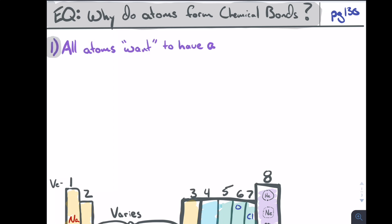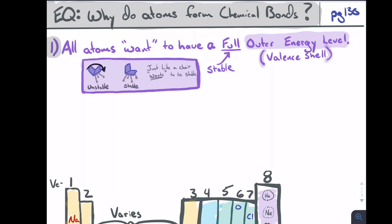Let's start with a couple statements. Number one: all atoms want to have a full outer energy level. Now I say want there, but atoms don't really want to do anything. A full outer energy level, or the valence shell or valence energy level, is really just what's considered to be stable.